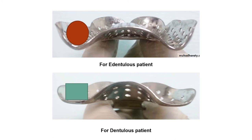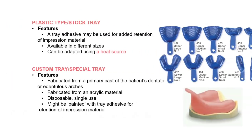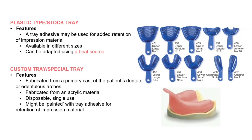Other than metal, plastic impression trays are also used; they can be molded by putting them into hot water. Custom trays are individualized trays fabricated from the patient's primary cast, made up of cold-cure acrylic.